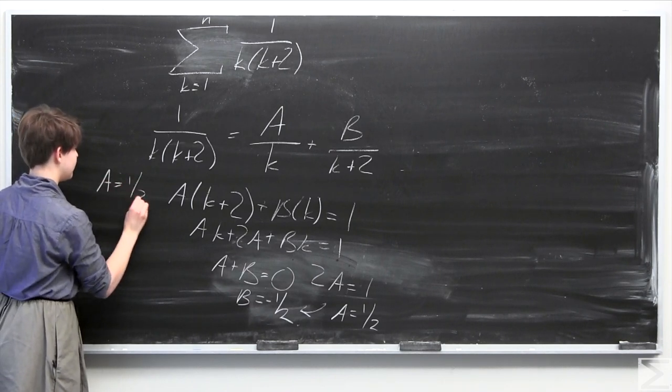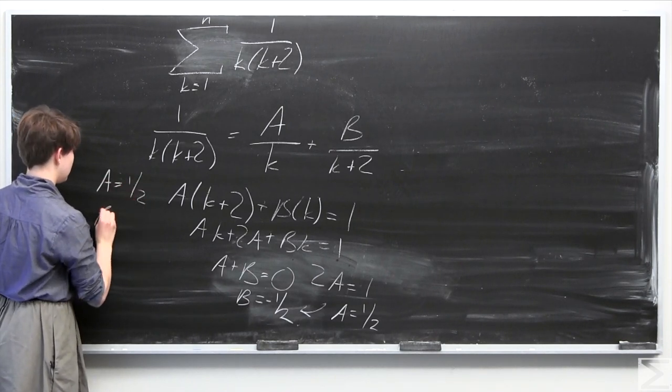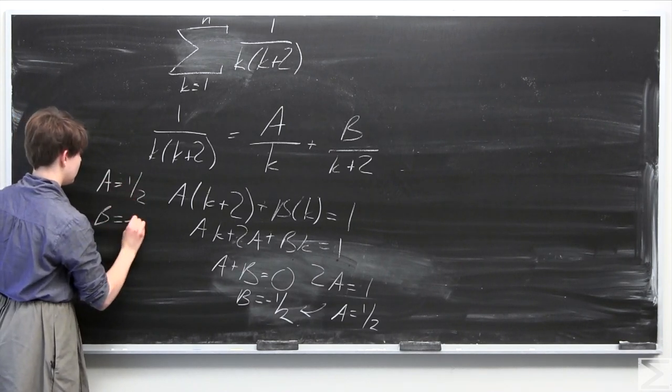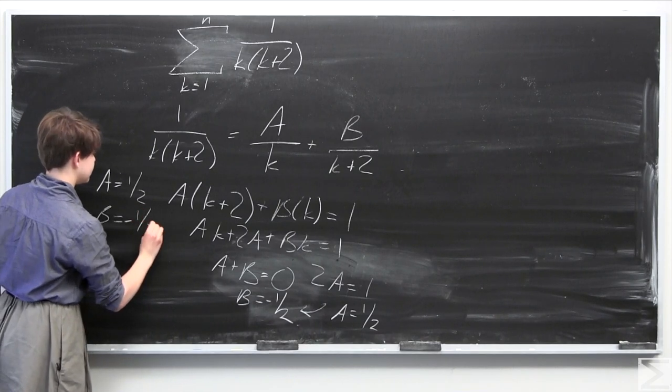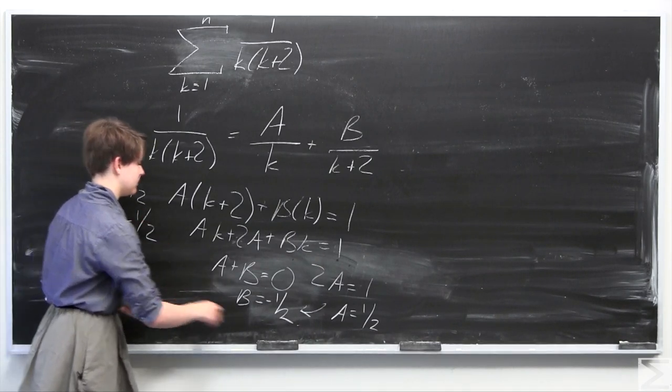This gives us a equals 1 half and b equals negative 1 half.